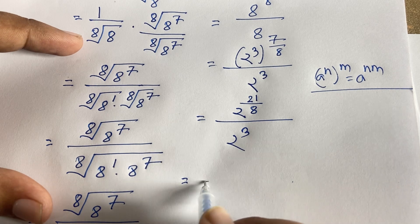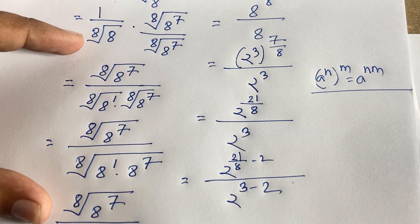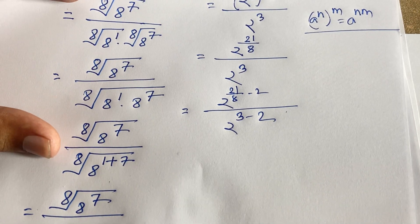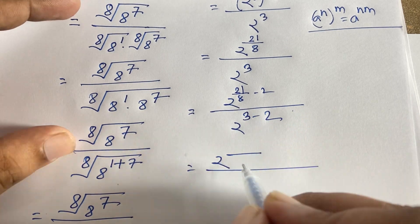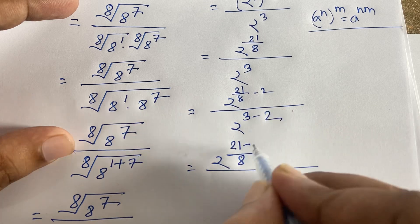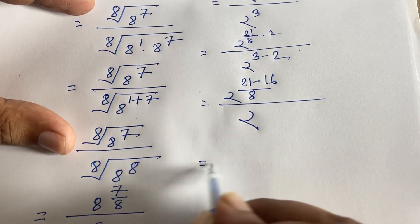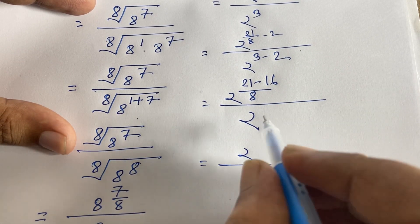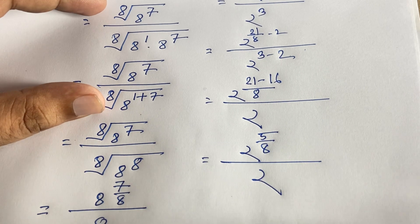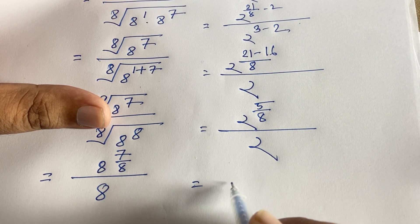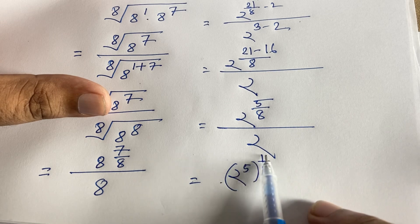Subtracting the exponents: 21/8 minus 3. The least common denominator is 8, so 3 = 16/8. This gives 2^((21−16)/8) = 2^(5/8). Rewriting, this is 2^(5×(1/8)) = (2^5)^(1/8) = (32)^(1/8). So the expression becomes the 8th root of 32 over 2.